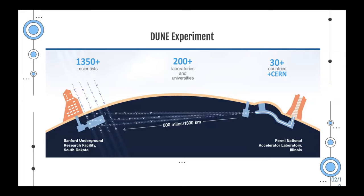We have three different flavors of neutrinos: muon neutrinos, tau neutrinos, and electron neutrinos. It seems that neutrinos can actually switch flavors, and that process is called neutrino oscillation, which is the main focus of the DUNE experiment.